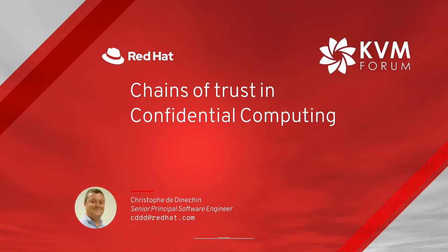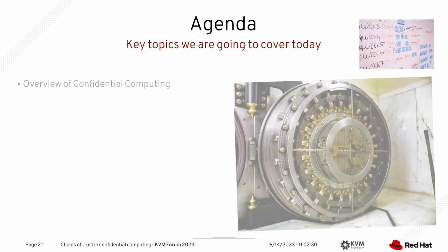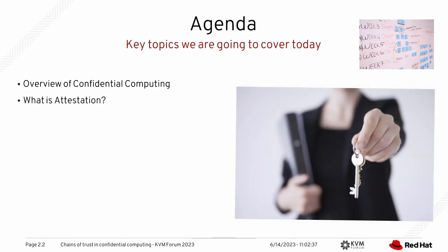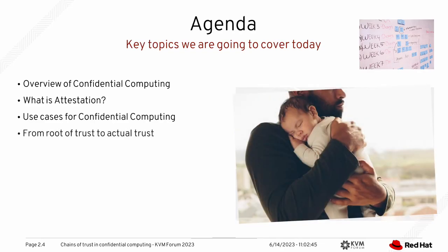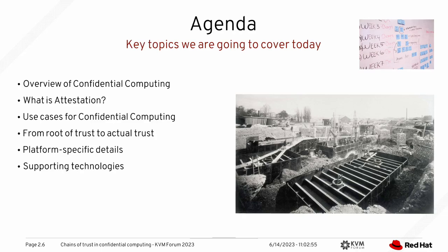My name is Christophe de Vincent, and I'm working for Red Hat. Today I'm going to talk about chains of trust in Confidential Computing. Here's what we're going to cover: a quick overview of what Confidential Computing is about, what attestation is, the use cases for Confidential Computing, going from root of trust to actual trust, platform-specific details, and the supporting technologies.